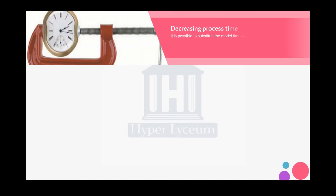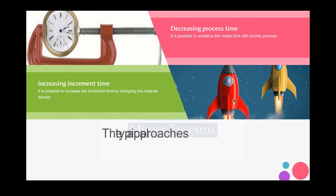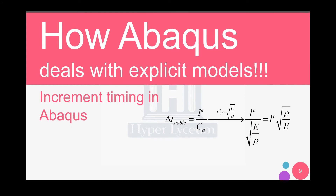Now there's a question: how can we make the explicit model faster? Since explicit models require small increment times, we need to increase time efficiency. There are two main approaches: decreasing the processing time, or increasing the increment time. In the explicit model, the increment time is based on the formulation where L_e is the length of the element and C_d is a material wave speed formula. Simplified, for a material with higher density, lower Young's modulus, and larger element size, you get a larger increment time — which decreases the number of increments and makes your model faster.